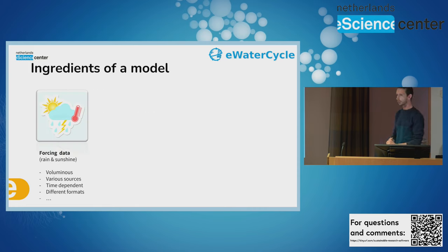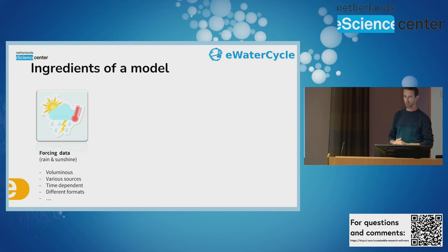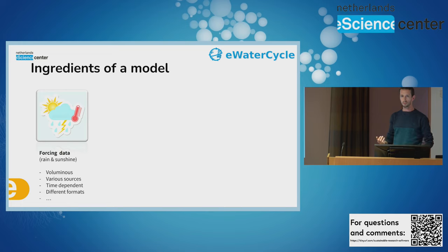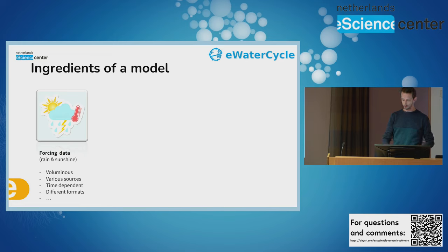Hydrological models come in very different shapes, but all of them typically need some information about what we call forcing data — that's information about the rainfall, the weather, and also maybe a little bit of sunshine to know how much water evaporates back into the sky. These data are typically big, time-dependent, come from multiple different sources, and come in different formats.